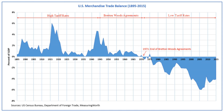Soviet representatives attended the conference but later declined to ratify the final agreements, charging that the institutions they had created were 'branches of Wall Street.' These organizations became operational in 1945 after a sufficient number of countries had ratified the agreement. On 15 August 1971, the United States unilaterally terminated convertibility of the U.S. dollar to gold, effectively bringing the Bretton Woods system to an end and rendering the dollar a fiat currency.